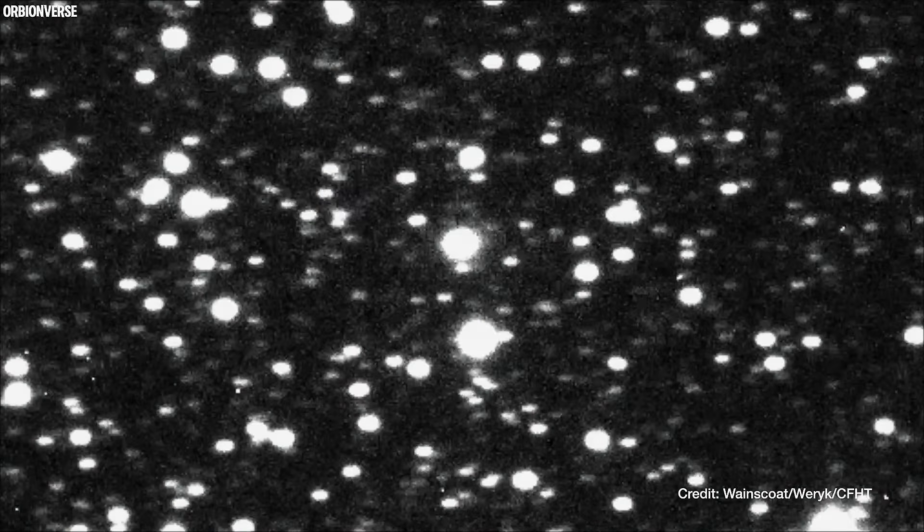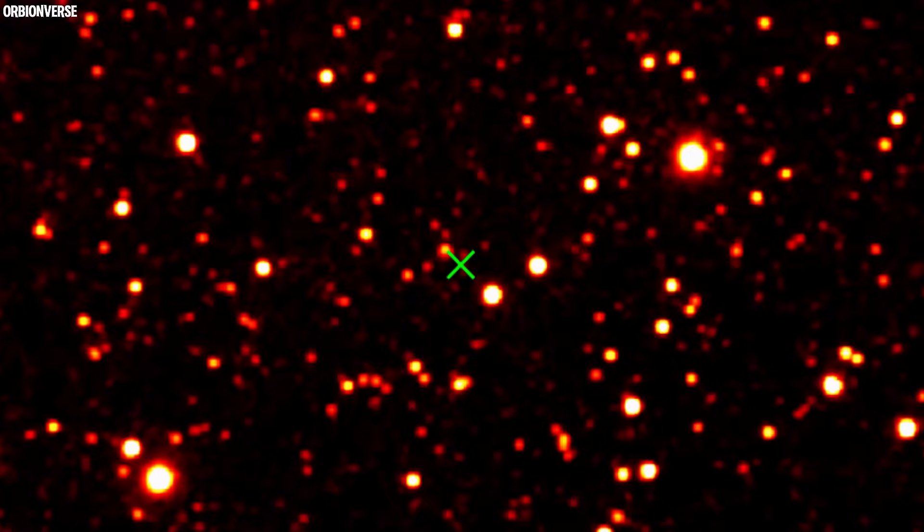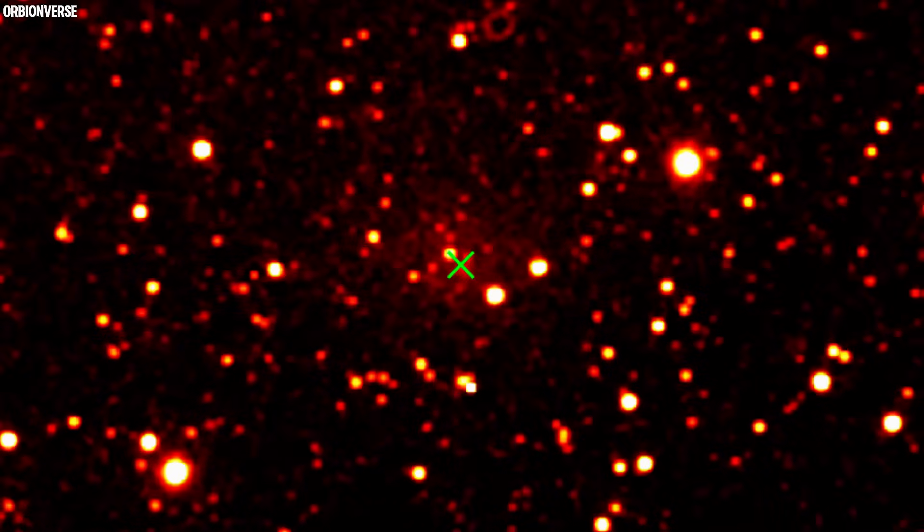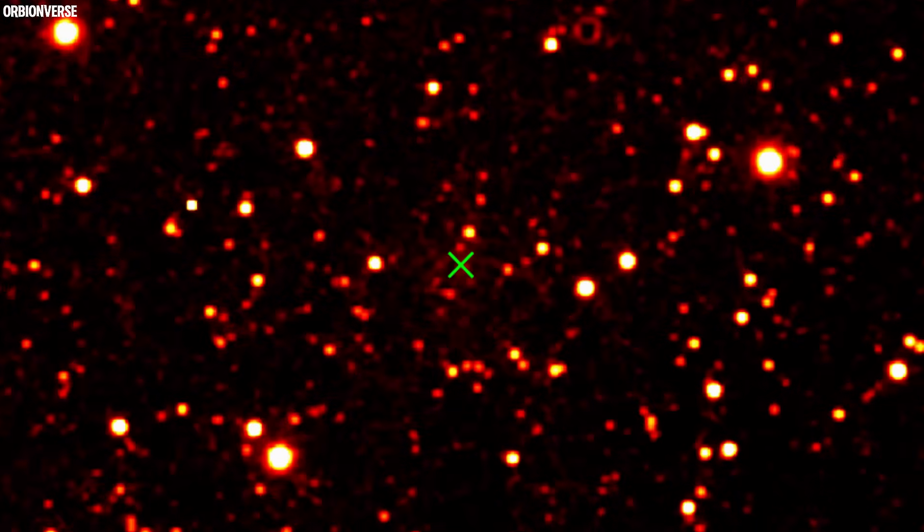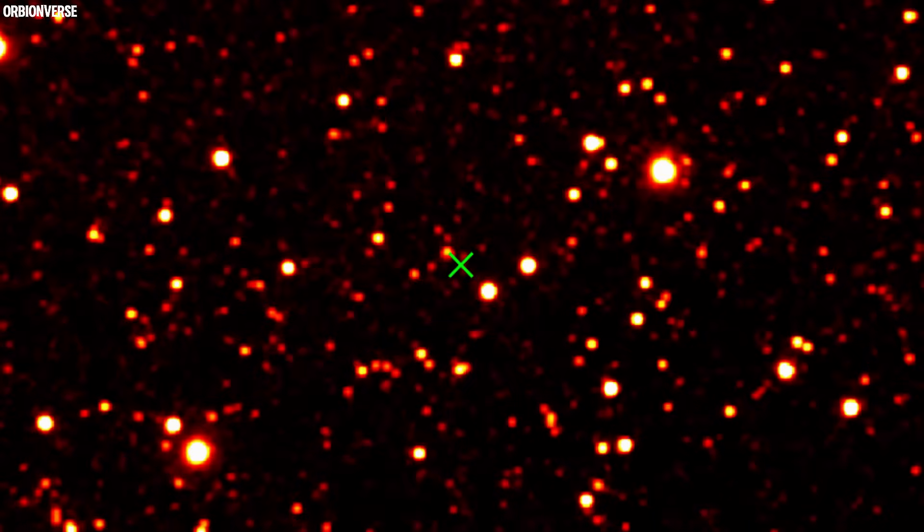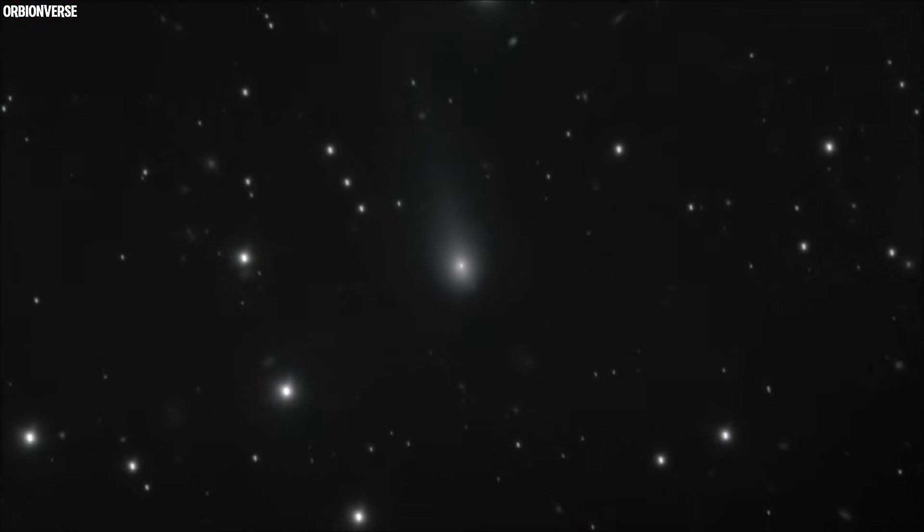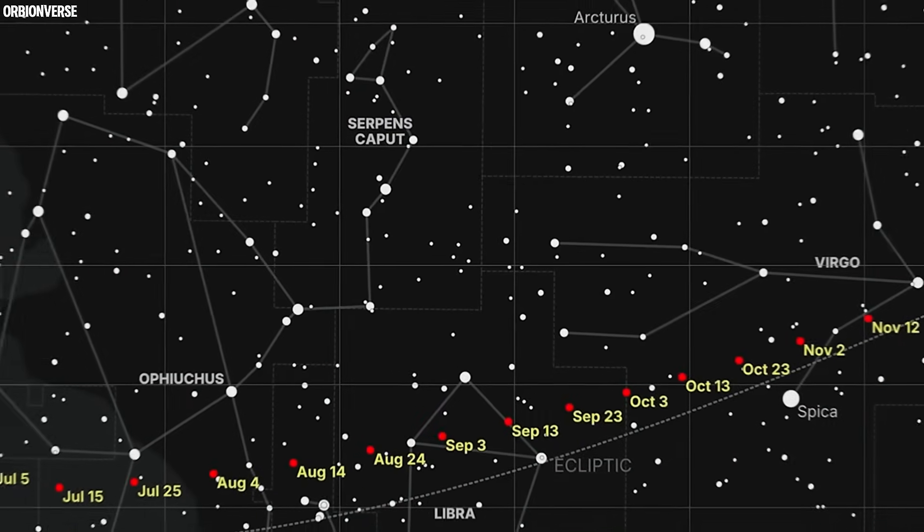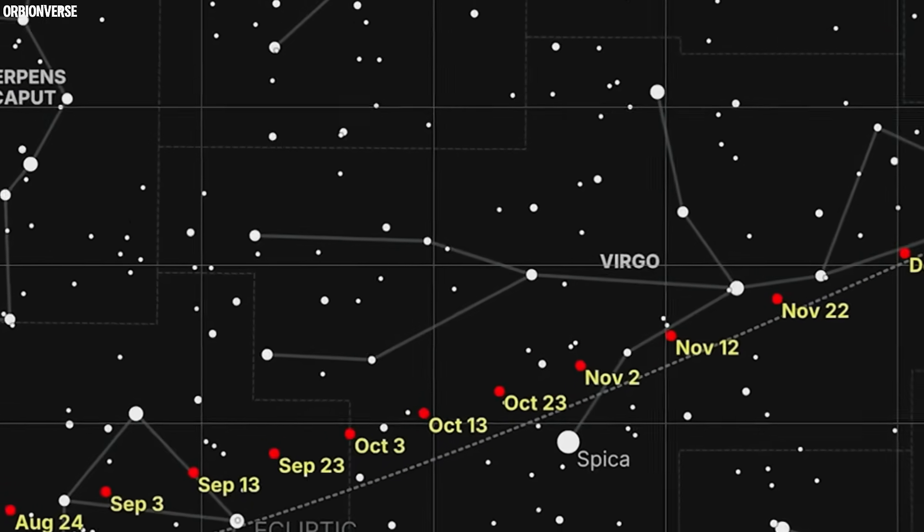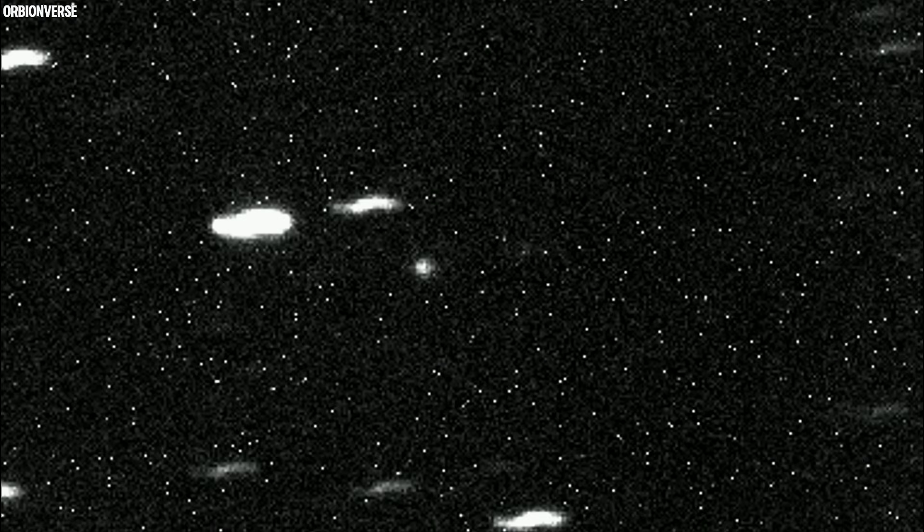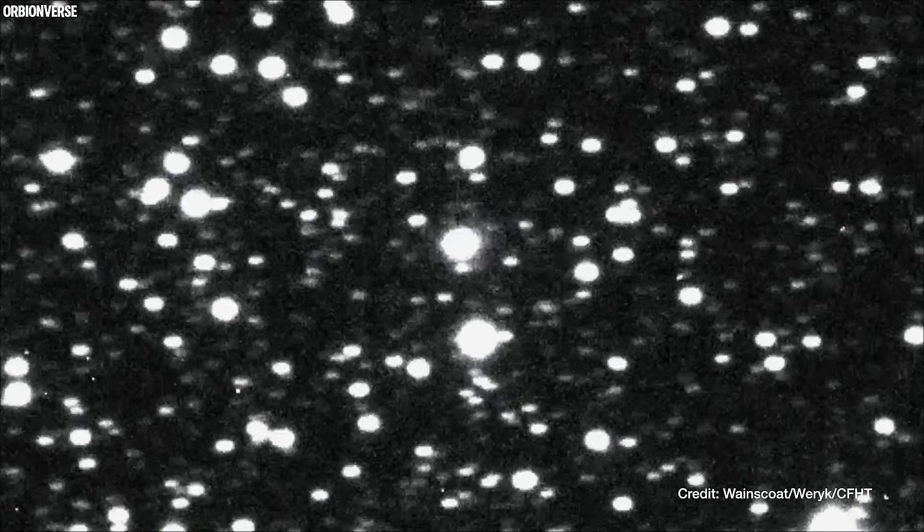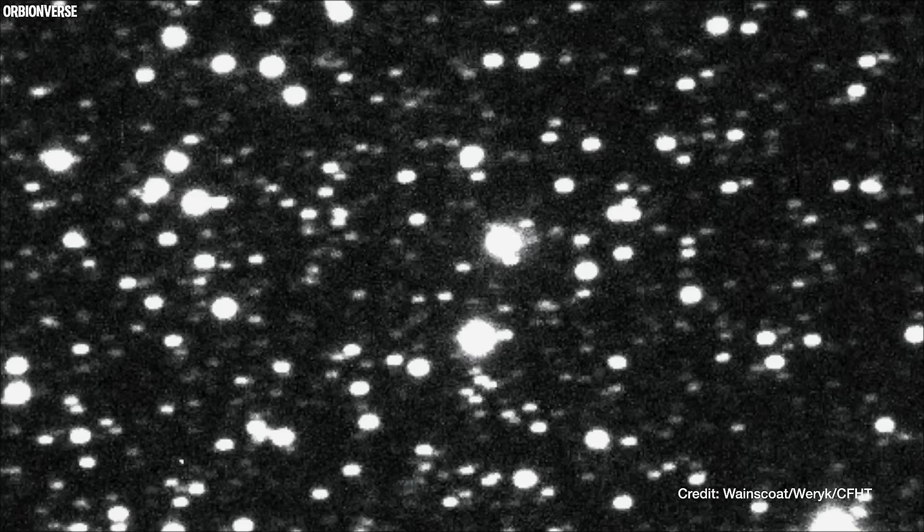But for every answer found, more questions arise. Why does it behave so differently from anything we've ever seen? Could its dust be the product of a star that lived and died before our sun? Is it possible that objects like 3i-ATLAS are common, but we're only now learning how to recognize them? And most haunting of all, if these frozen visitors are drifting through space in all directions, what else might be out there, waiting to cross our path next?